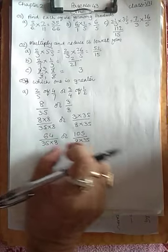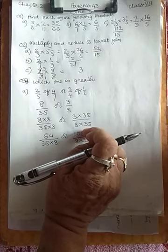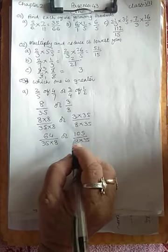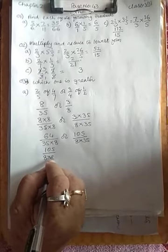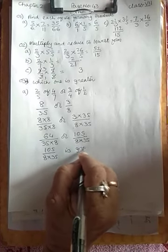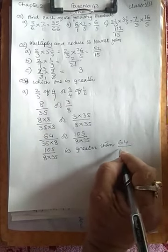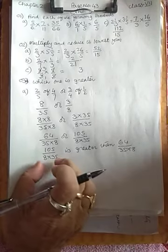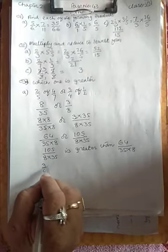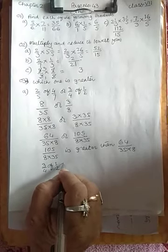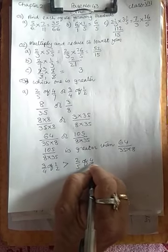Now our denominators are the same, so the fraction with the greater numerator is greater. Here 105 is greater than 64. So 3/4 of 1/2 is greater than 2/5 of 4/7.